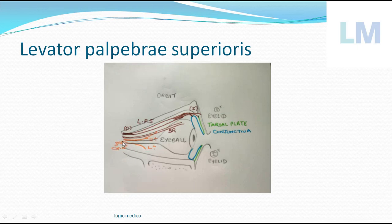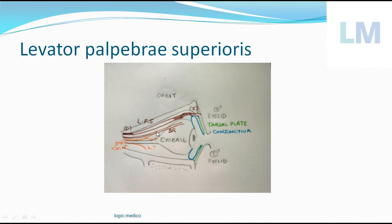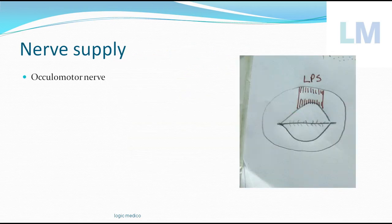The nerve supply is the third cranial nerve, or the oculomotor nerve, which supplies levator palpebrae superioris. The third cranial nerve has two divisions: upper division and lower division. By common sense, the upper division supplies the superior rectus, and subsequently a few fibers pass through the superior rectus to supply the levator palpebrae superioris — because levator palpebrae superioris is a detached part of the superior rectus. The oculomotor nerve comes from the undersurface and ends by supplying the levator palpebrae superioris.